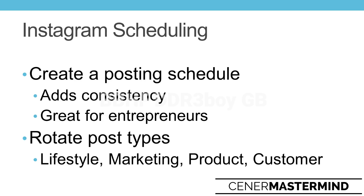For every two lifestyle images you post, you could post one marketing image. Then you can go ahead and build a calendar and a schedule for the next 30, 60, 90 days and have all your content ready up front, which makes your life a lot easier going forward.